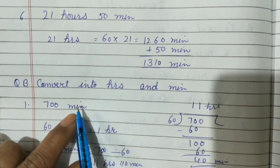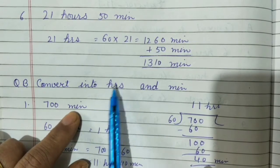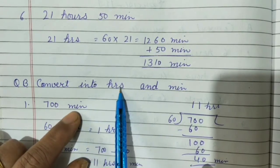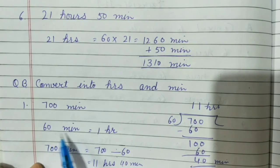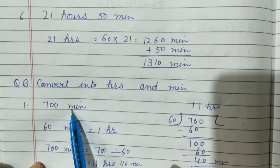Our question is 700 minutes. Now what do we have to do? We have to do the reverse, vice versa, convert minutes to hours. Minutes are more, hours are less. So you should know 60 minutes is equal to 1 hour.